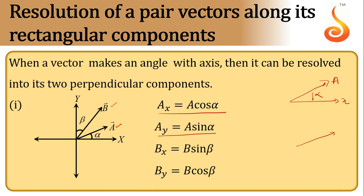While B subtends an angle beta with the y-axis, which means that its x component turns out to be B sin beta and y component turns out to be B cos beta.